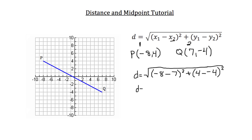So now let's go ahead and simplify everything inside the parentheses. Negative 8 minus 7 is negative 15 squared. Now we can simplify the right parentheses, which was 4 minus a negative 4, which then minus a negative turns into a plus. So we have 4 plus 4, which is 8 squared.